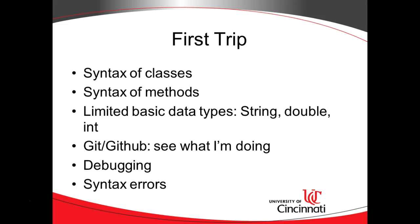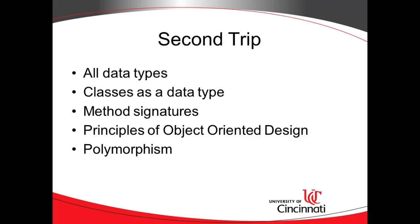That's our first trip around the carousel. In the second trip, we're going to expand on what we did in the first. We're going to take a look at all data types — byte, short, float, long. Then we're going to look at something really interesting: how we can use classes as a data type. A data type means a variable type, or also a method parameter. We'll find that we can define our own data types, which is one of the most important things we'll do in the Java programming language.